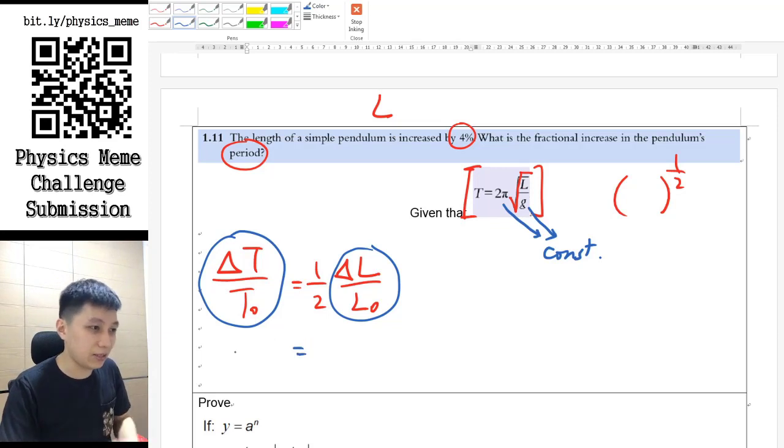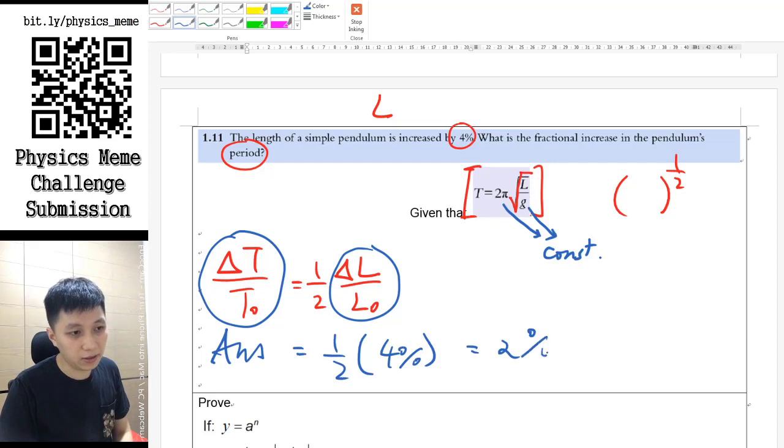So basically the answer would be how the period would change would simply be half of 4%, and that is simply 2%. So this is one way that you may be able to apply this equation onto a question like this. However, I don't think you will see a similar question like this in the exam, but I guess it's good to know about it.